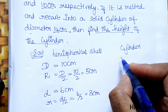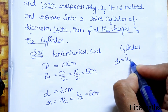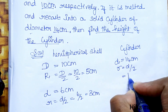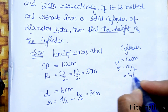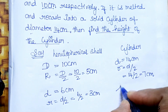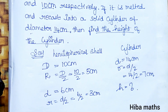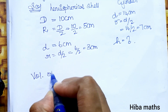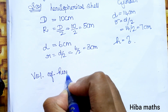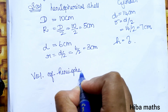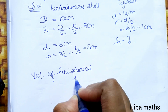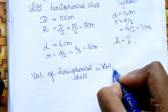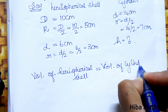The diameter of the cylinder is 14 cm. So the radius is 14 divided by 2, which is 7 cm. We now compare: volume of hemispherical shell equals volume of cylinder.